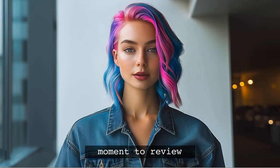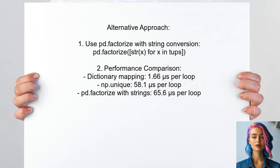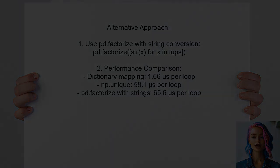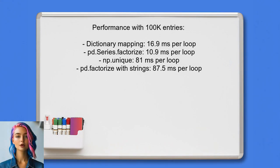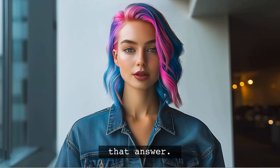Let's take a moment to review another user's answer. An alternative approach to factorizing a list of tuples is to use the pandas factorize function with string conversion. However, this method was found to be slower compared to other techniques. For instance, one user tested various methods and found that using a dictionary to map tuples to unique integers was significantly faster. In tests with larger datasets, the dictionary mapping method remained efficient, while the other methods showed slower performance. This highlights the importance of choosing the right approach based on the size of your data.